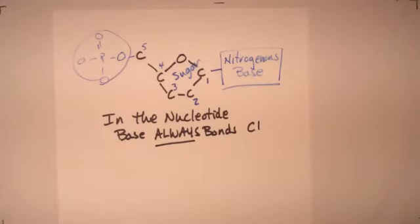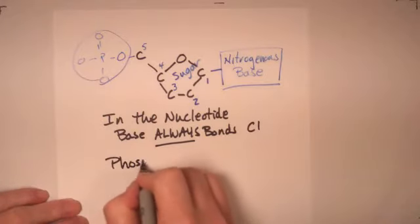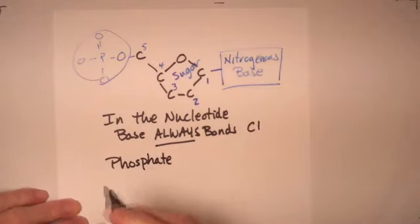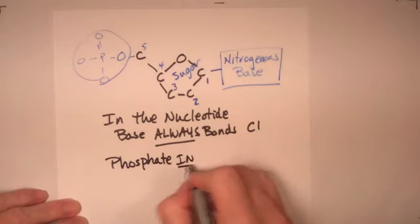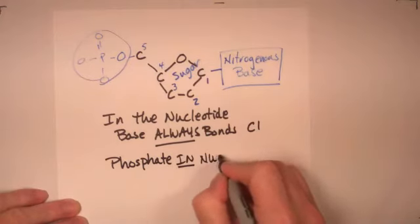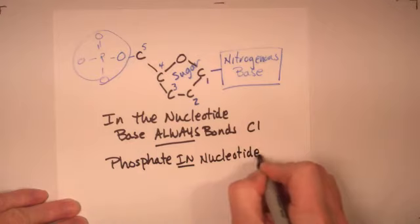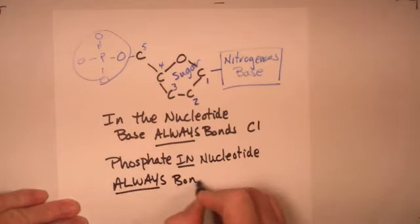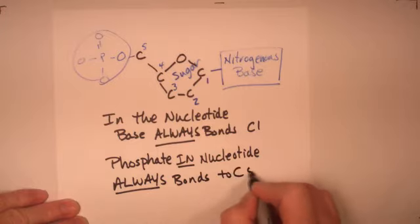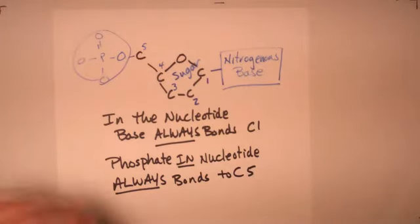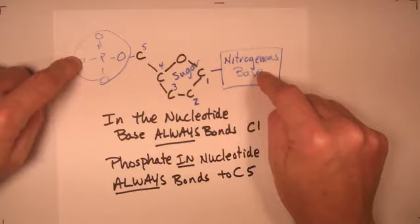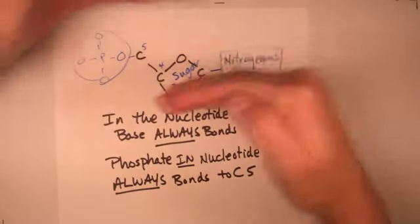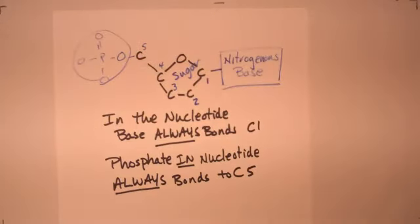Okay, and so in a nucleotide, the phosphate in the nucleotide, that phosphate functional group in a nucleotide, always bonds to C5. Okay, so here's your nucleotide. This is the little subunit that we put together, or gets put together, to make strand after strand after strand.